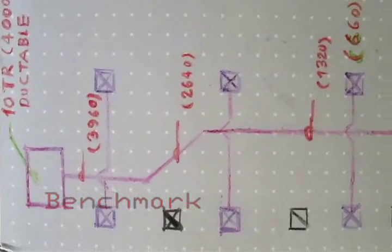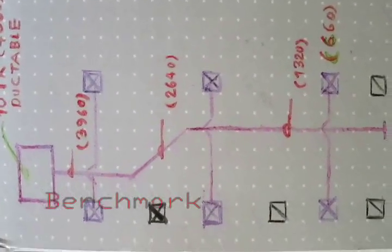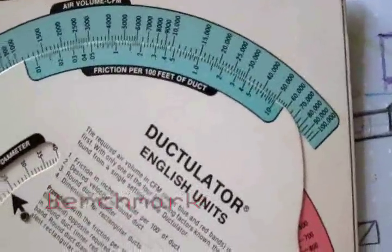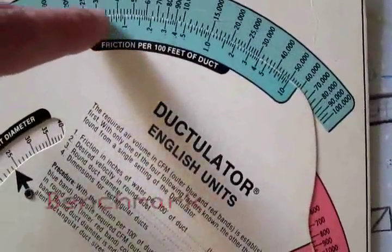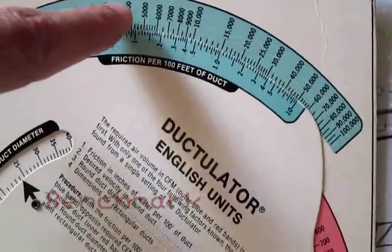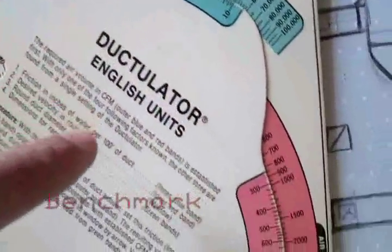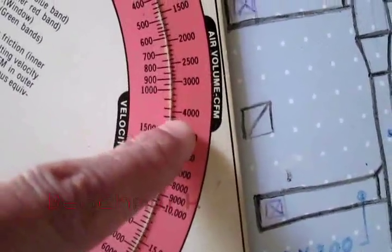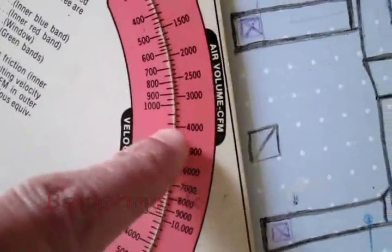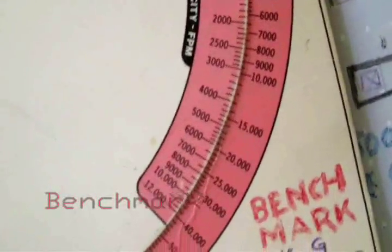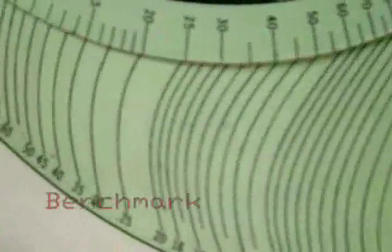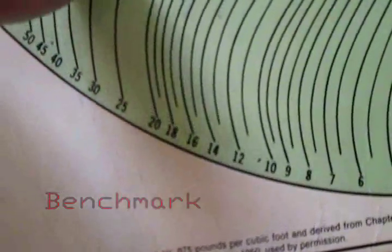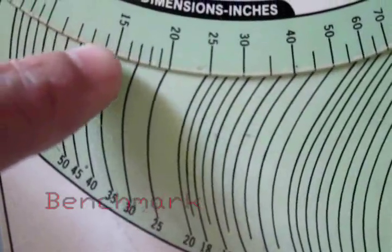For this we have to do calculations, which we have already done. We will start by using the ductulator for the sizes. The first value is 4000 CFM, and we are getting a 500mm duct size between the full ceiling and the slab. We are starting with 0.1 friction with 4000 CFM.